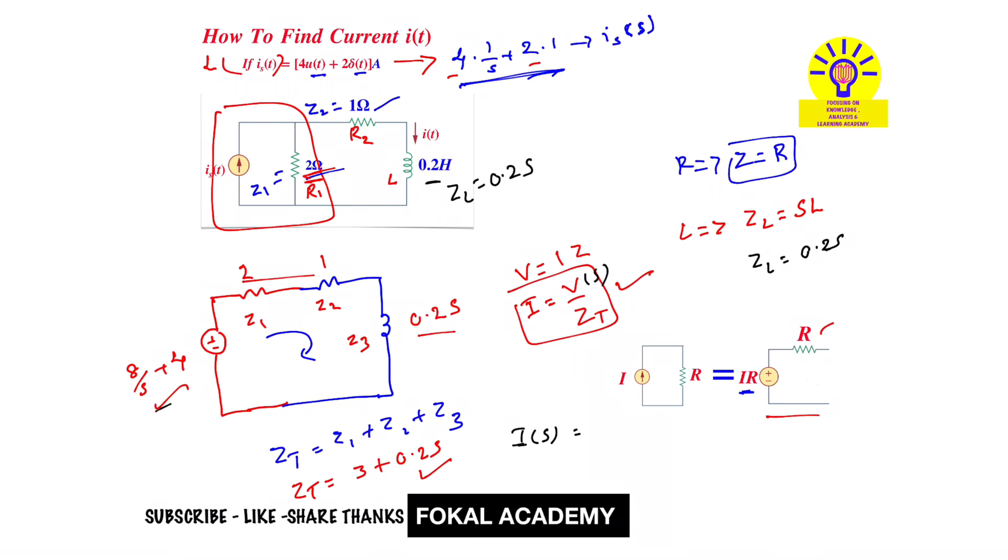V of S is 8 by S plus 4 upon ZT, which is 3 plus 0.2 S. By simplifying this, we will get 20 S plus 40 upon S times S plus 15. This is I of S.